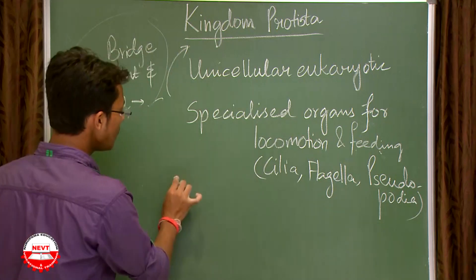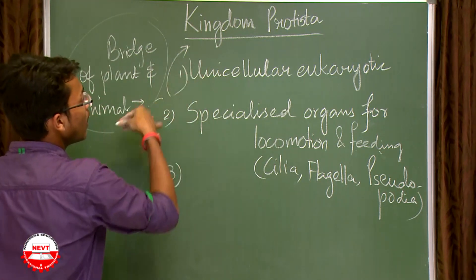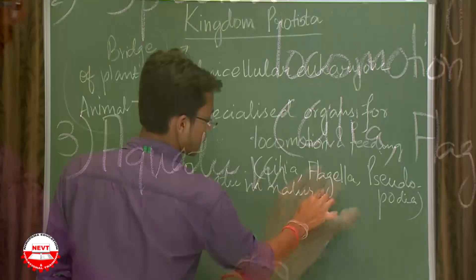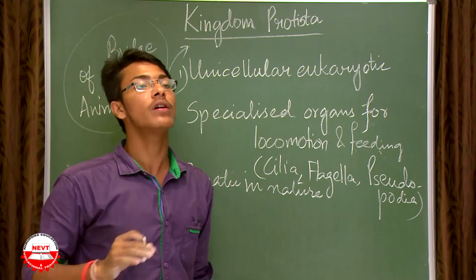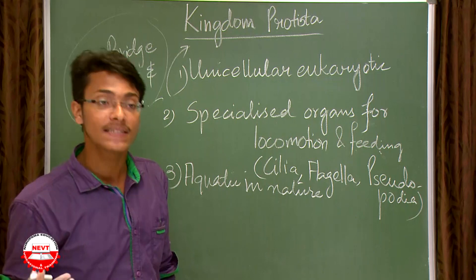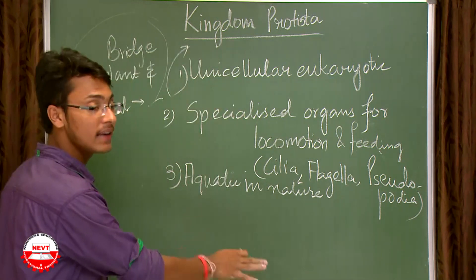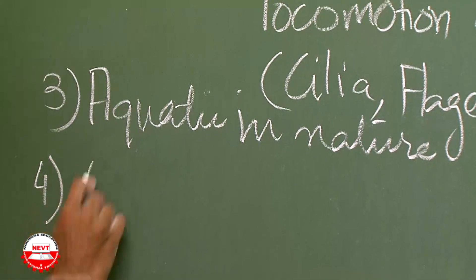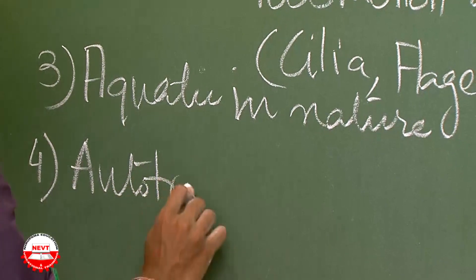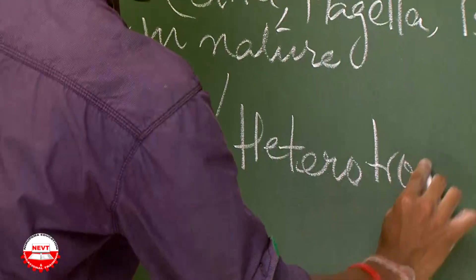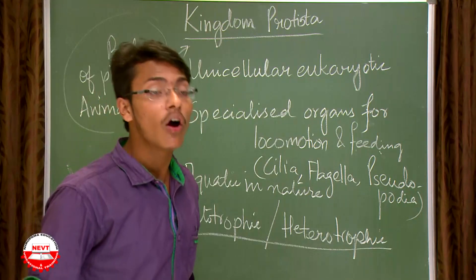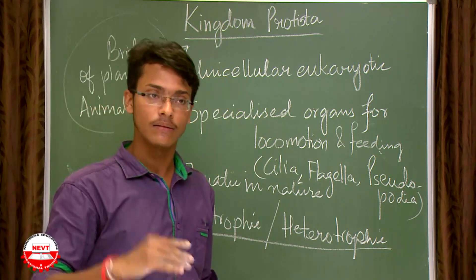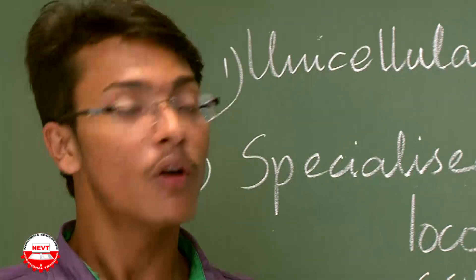The third characteristic of Protista is that they are mainly aquatic in nature — found in oceans, seas, and rivers. The fourth characteristic is that they are either autotrophic or heterotrophic, depending on the organism and its needs.